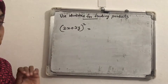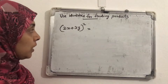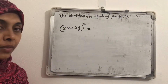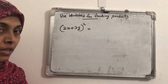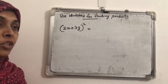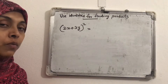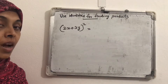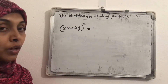Now, when we get a question, we want to find out which identity will be suitable. Given the question (2x + 3y) whole square, which identity can we use here? Is it in the form (a + b)² or (a − b)² or (a + b)(a − b) form? It is the first standard identity — the (a + b)² form.